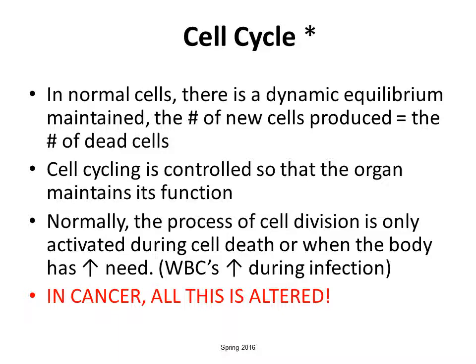Think about it — when do we have more WBCs? We need to fight an infection, so the body inherently will produce more WBCs. When do we have an abnormal production of WBCs? Mrs. Howard is going to talk about this in hematology — that's when you have a leukemia going on. So there's always either this dynamic equilibrium, and when something disrupts it, it means there's a disease in the cell.